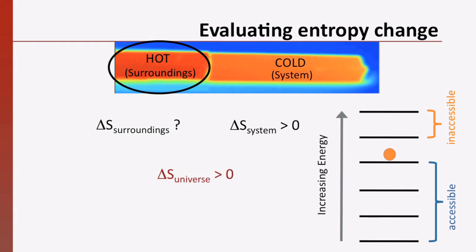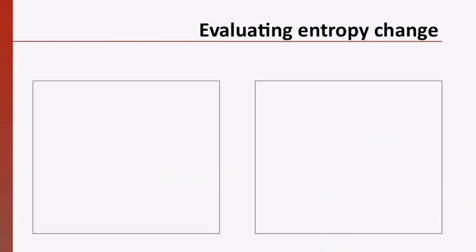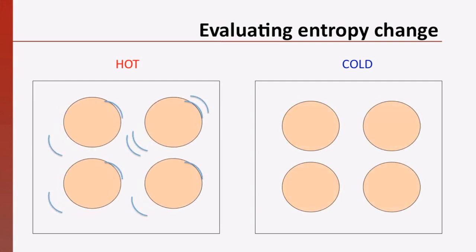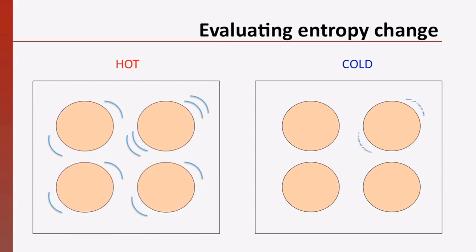But what about the surroundings? The total entropy of a system and its surroundings has to increase if the process is spontaneous. Let's use a very simplified diagram to think about the heat diffusion demo. We have two bars made of the same material. One bar is hot and one is cold. We'll look at four atoms making up each bar. The hot bar has more energy than the cold bar. Its atoms are moving more than the atoms in the cold bar, which seem barely to move. Now, before we put the cold bar in contact with the hot bar, let's think about each bar separately.